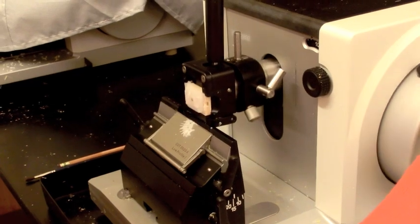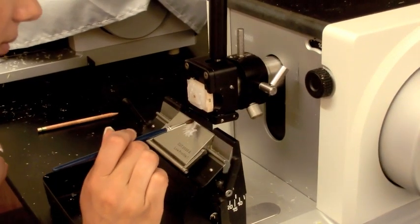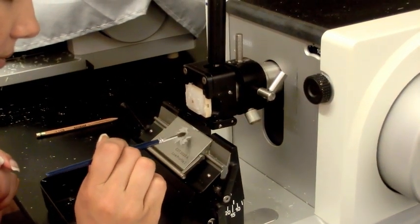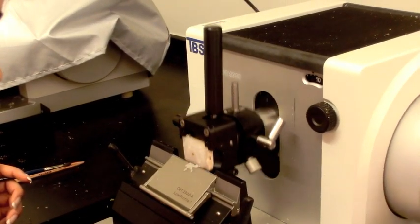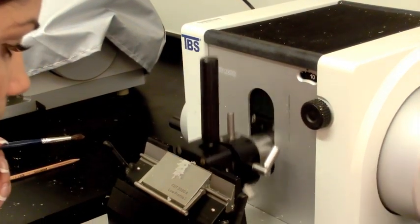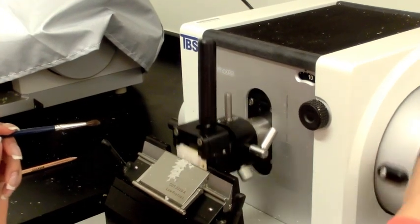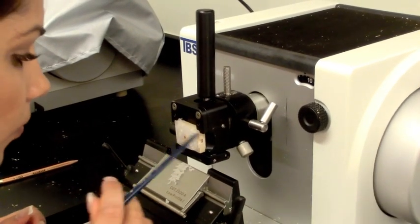As you begin to cut into the paraffin specimen, discard all unwanted sections using a paintbrush. Be careful not to drag the brush across the blade. Continue turning the wheel until you obtain a desired section. Once you have done so, make a ribbon that contains multiple sections of your tissue.